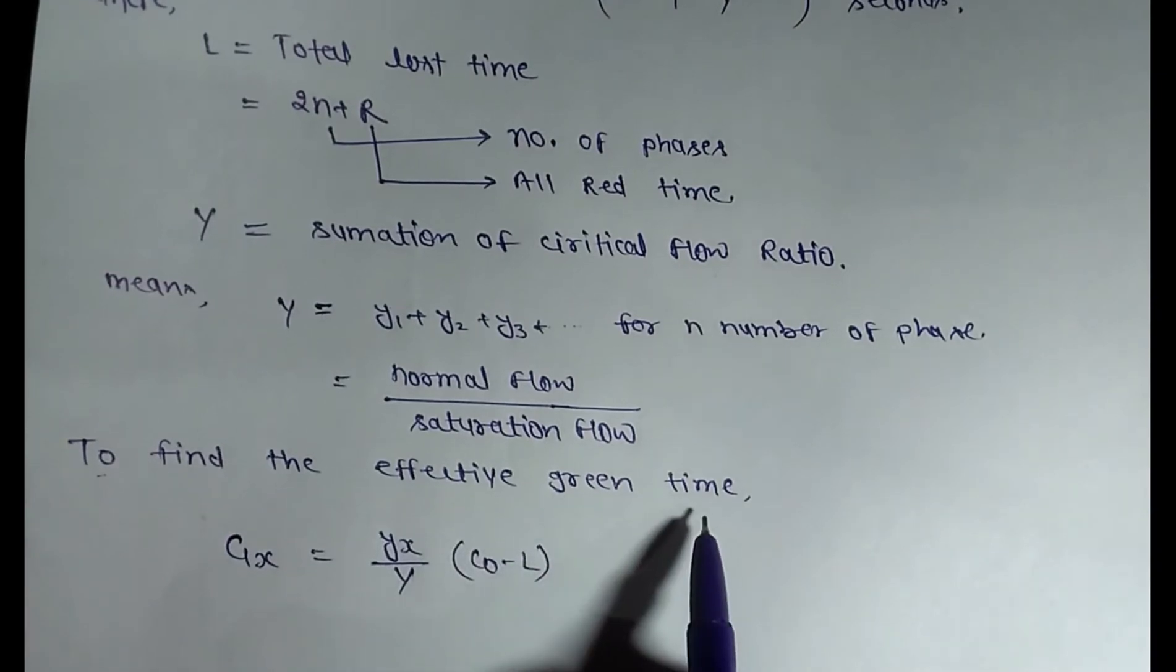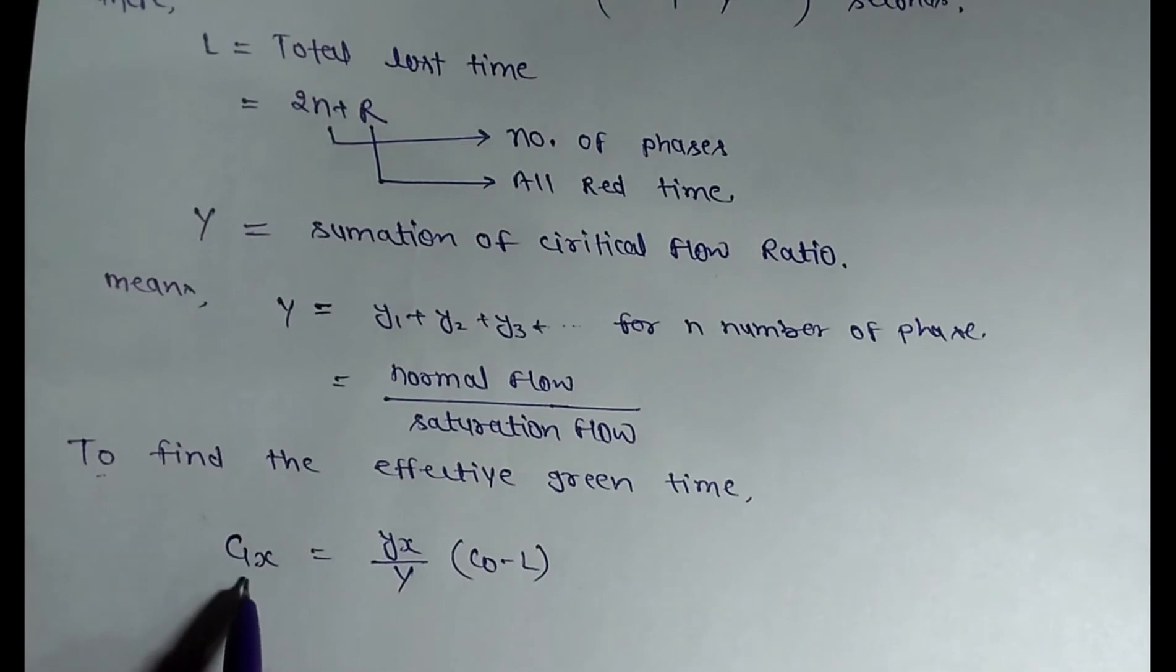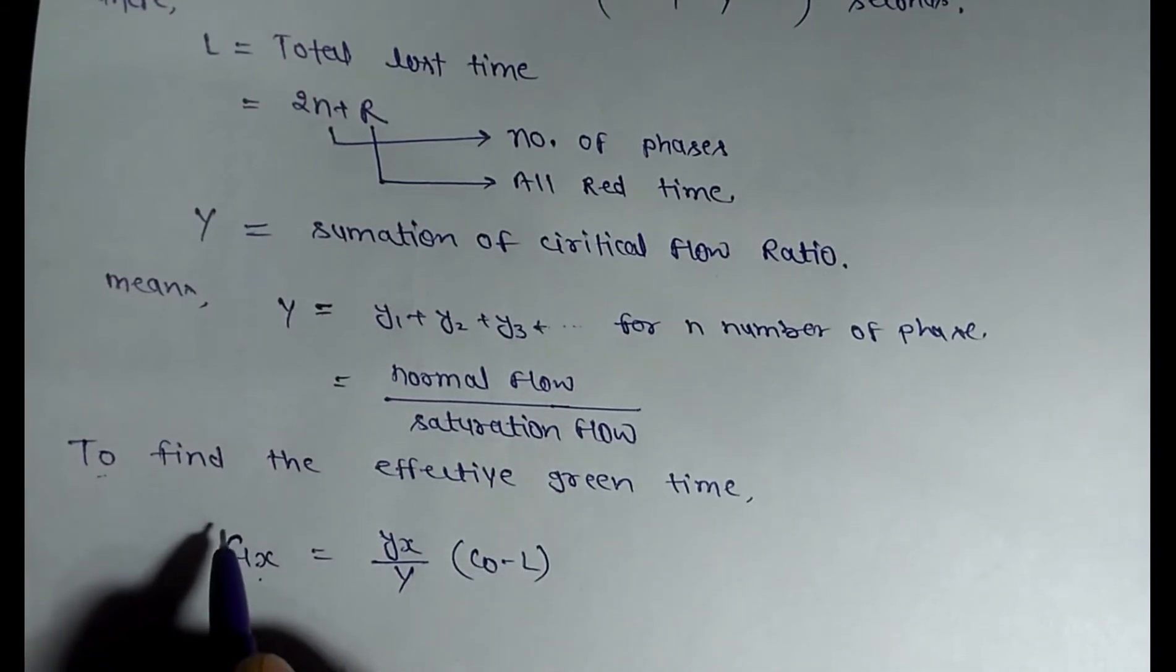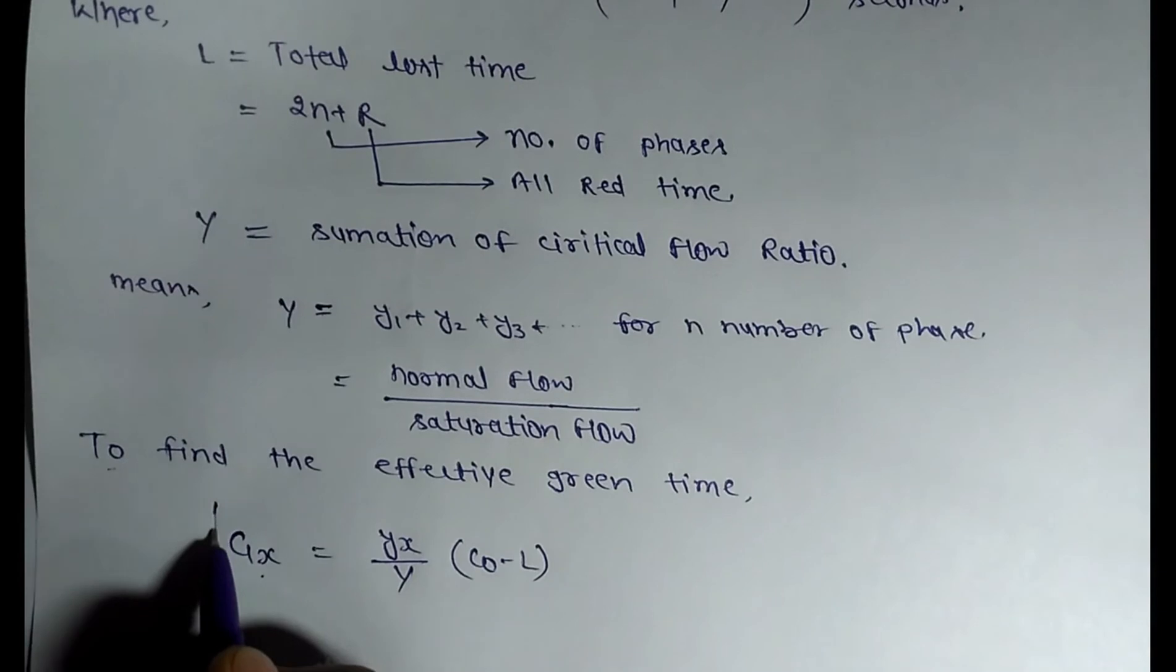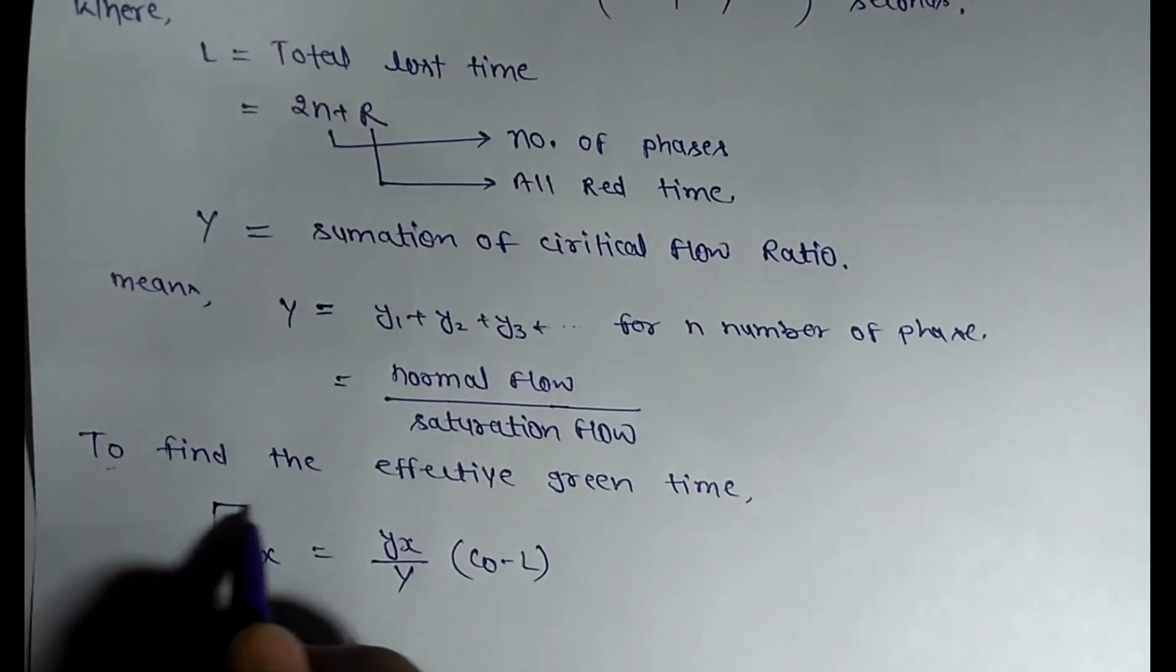Yx is the critical flow ratio in phase X. Y is the summation of critical flow ratios. Co is the optimal cycle time, and L is the total loss time.